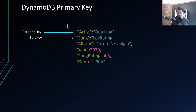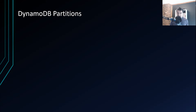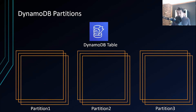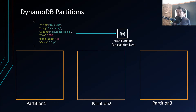Data in DynamoDB is actually stored in partitions. Think of a partition as allocated storage for the table, backed by solid state drives (SSDs). Since DynamoDB is highly durable, under the hood each partition is replicated across three different availability zones.